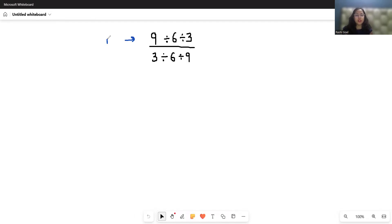We know that the upper one is the numerator and the lower one is the denominator. So first I'm going to solve the numerator, that is 9 divided by 6 divided by 3 separately. Now I'm taking two terms at a time.